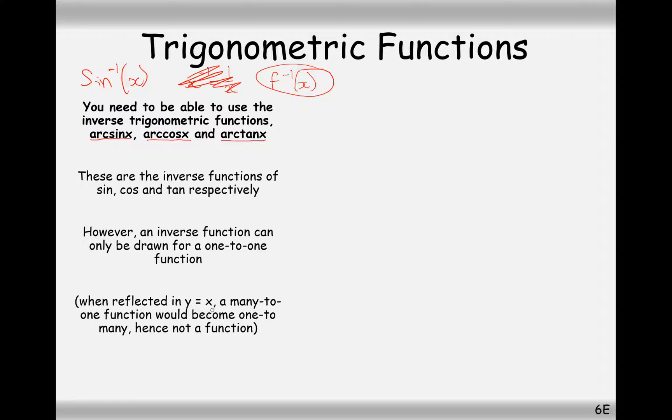Just a reminder that if you do find the inverse function, then you're reflecting the graph in the y equals x line, and then a many to 1 function, which the sin, cos and tan functions are, will become a 1 to many function, and 1 to many functions are not allowed as functions by the definition of function. So a little bit of a technicality there, but you have to restrict the theta values for you to be able to find an inverse function of sin, cos and tan.